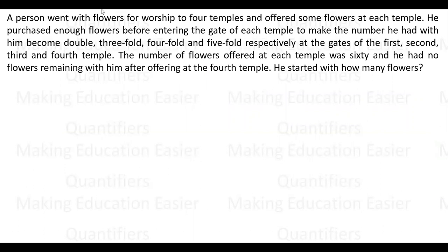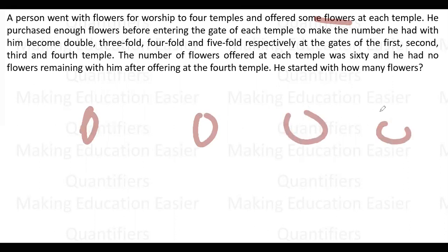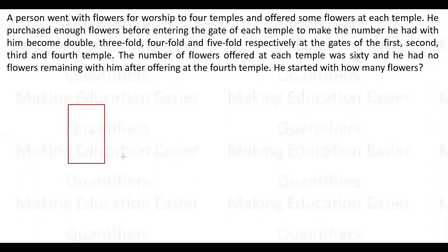Let's see what the questions are. This is the first question. It says a person went with flowers for worship to four temples and offered some flowers at each temple - temple one, temple two, temple three, and temple four. He purchased enough flowers before entering the gate of each temple to make the number he had with him become double, threefold, fourfold, and fivefold respectively at the gates of first, second, third, and fourth temple. So what does that mean? This is the first temple gate, this is second temple gate, third temple gate, and fourth temple gate.